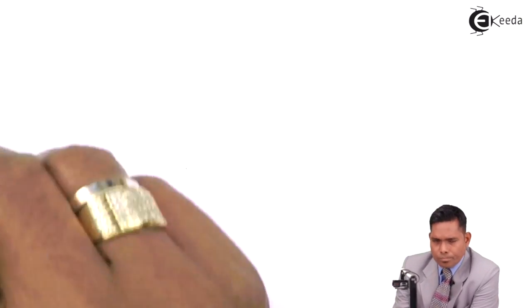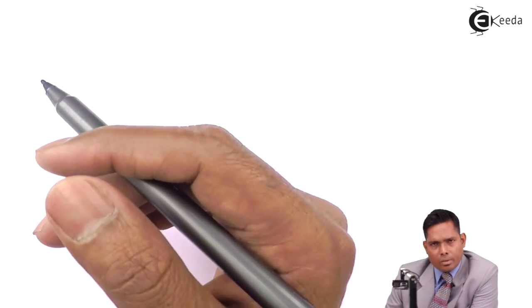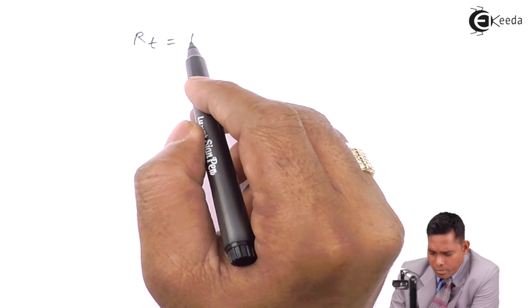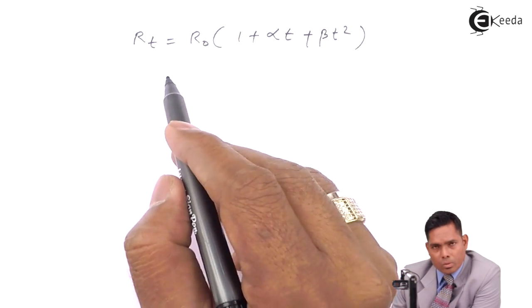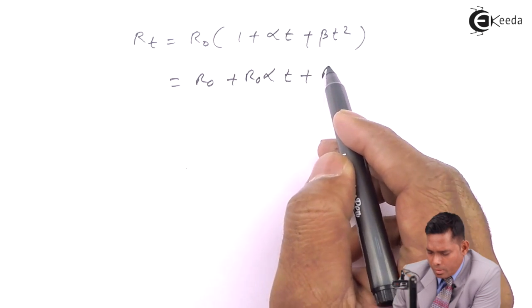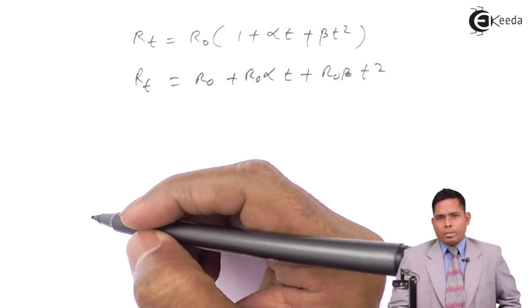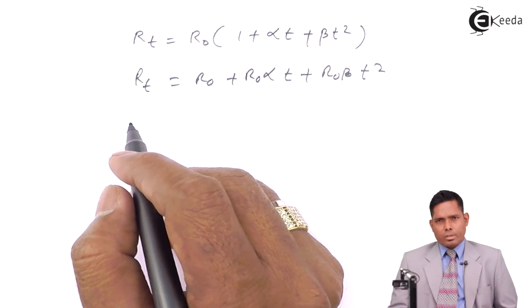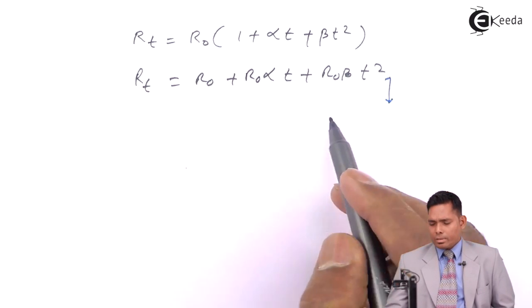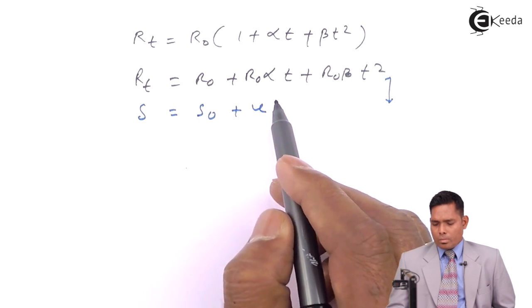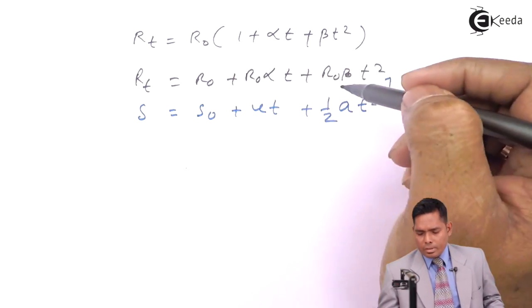The actual curve goes upward and concave. The expression Rt = R0 + R0·alpha·T + R0·beta·T² can be compared to the kinematical equation s = s₀ + ut + ½at², where T here stands for temperature (not time), and Rt corresponds to displacement s. Just as the s-t graph for uniformly accelerated motion is parabolic, this resistance-temperature graph is similarly parabolic.